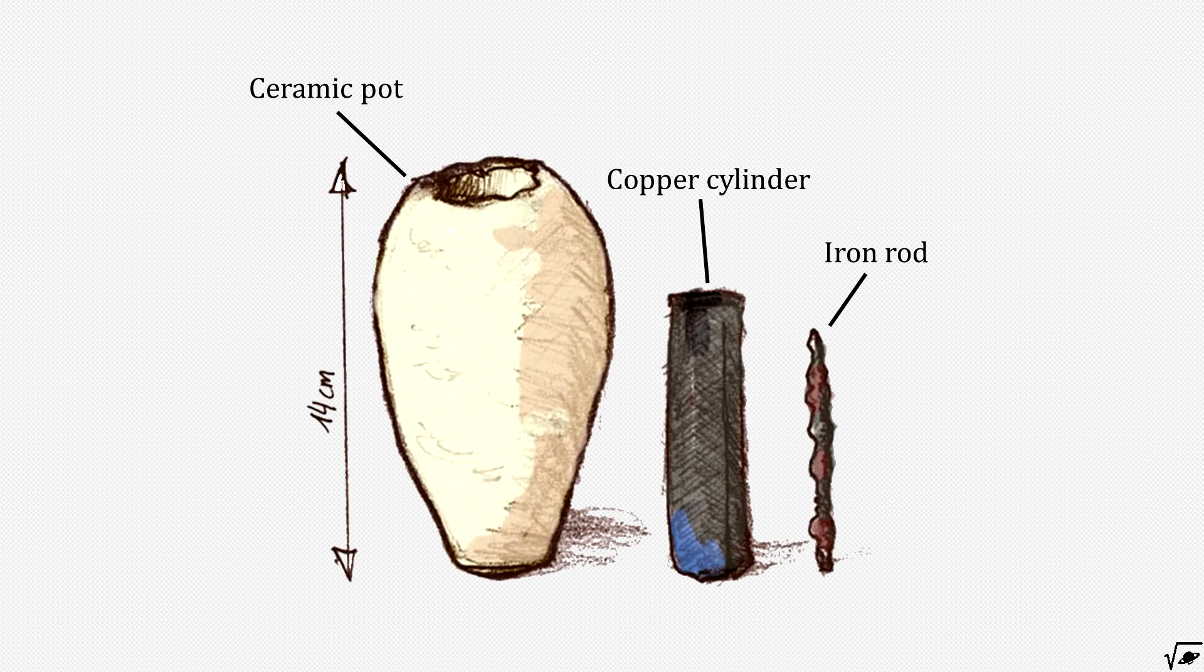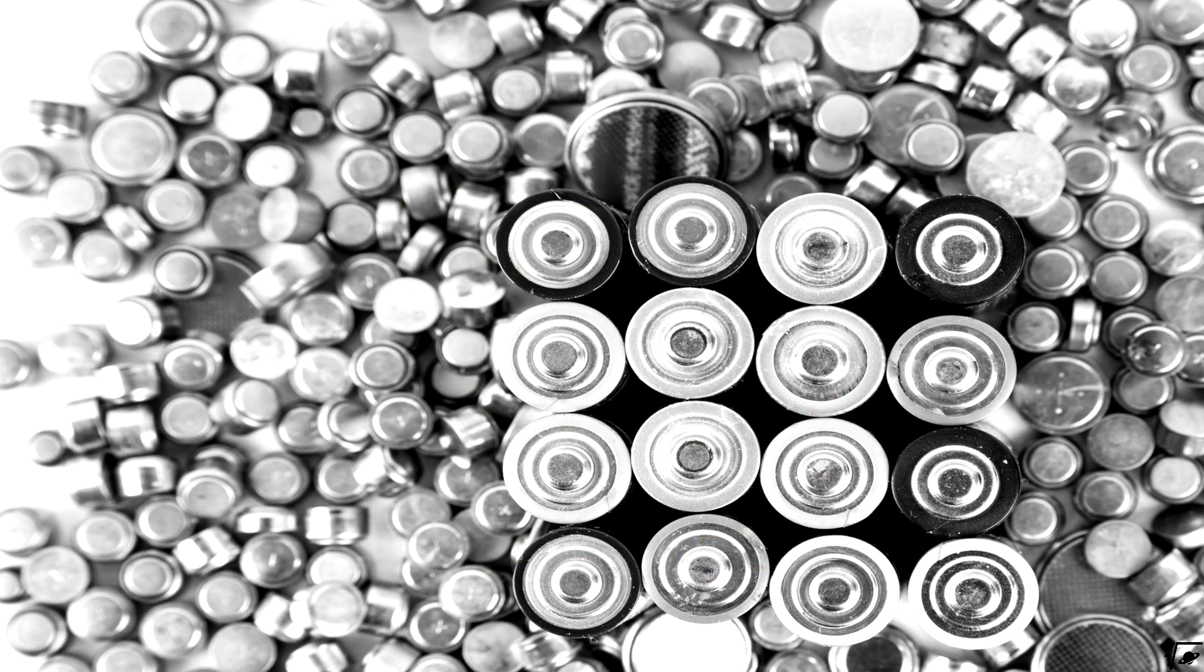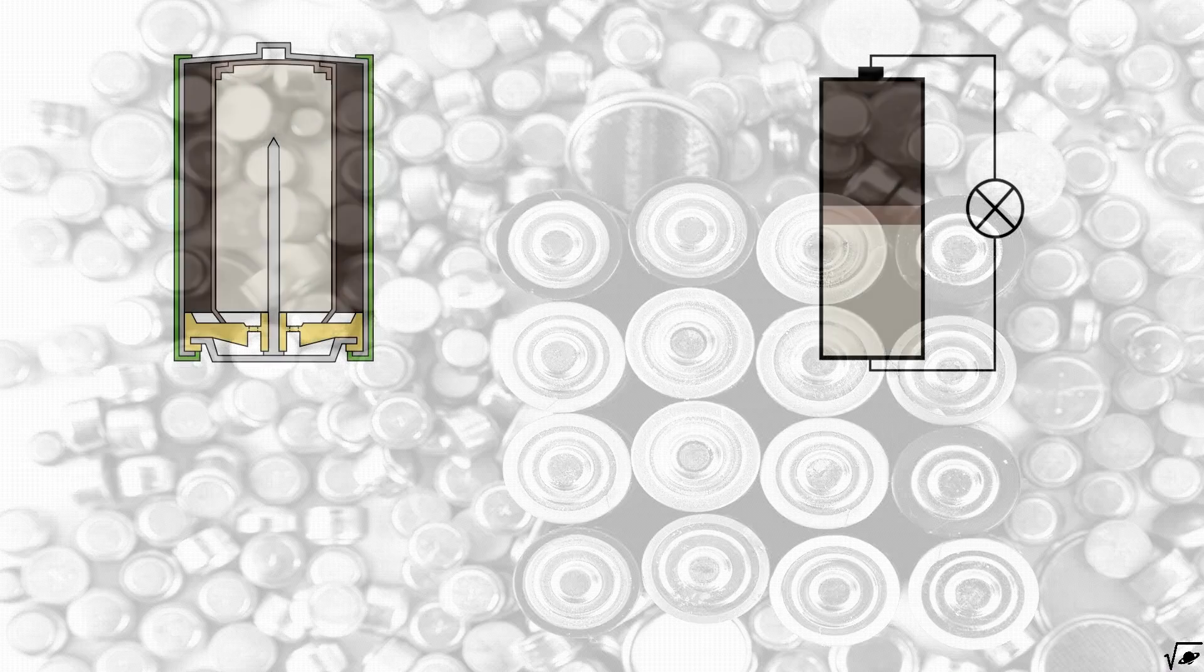How would that have worked? A battery, like the modern alkaline AA battery, has two major substances.